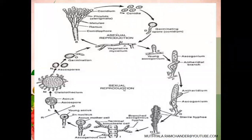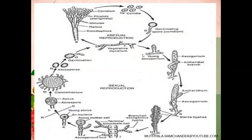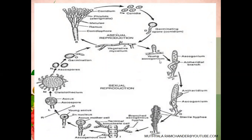During sexual reproduction, in unfavorable conditions, from the vegetative mycelium, a young short club-shaped structure is developed. This young short club-shaped structure is called the Young Ascogonium. Ascogonium is the female reproductive organ of Penicillium.